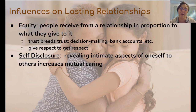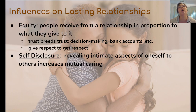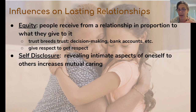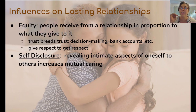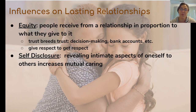Two things influence how long a relationship lasts: equity and self-disclosure. Equity means people get out of a relationship what they put into it. If both partners invest a lot of energy, each gets back what they give. If you trust someone, they tend to trust you back; if you give respect, they tend to give respect back. If that equitable give-and-take doesn't exist — if one partner is doing everything and the other isn't contributing — it tends to breed resentment and make relationships fail.